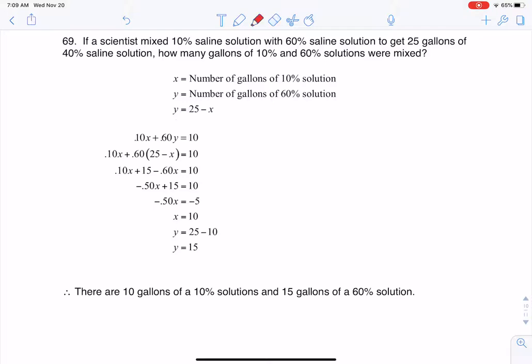This scientist is mixing a 10% saline solution and a 60% saline solution, and ultimately gets 25 gallons of a 40% saline solution. So we're being asked here how much of each of these solutions were mixed up.